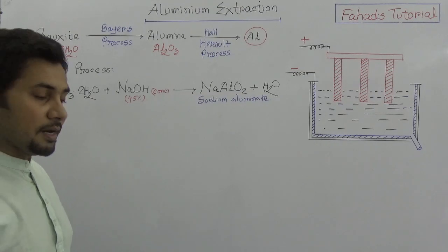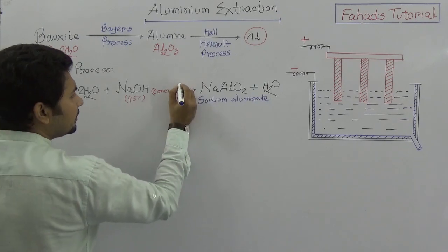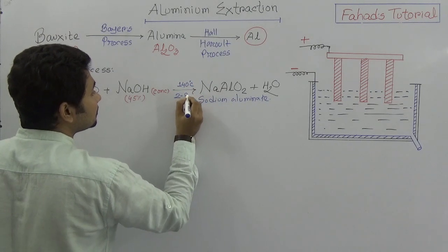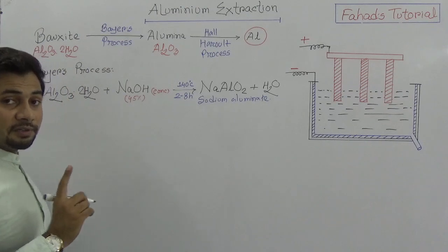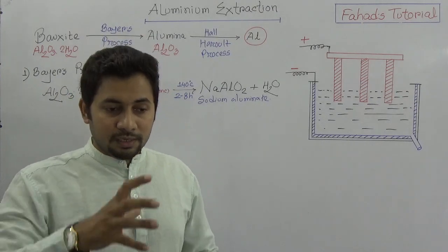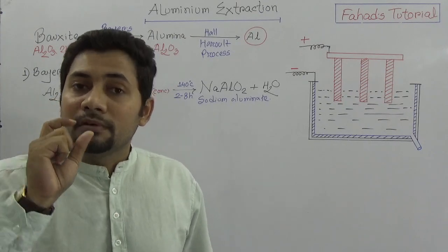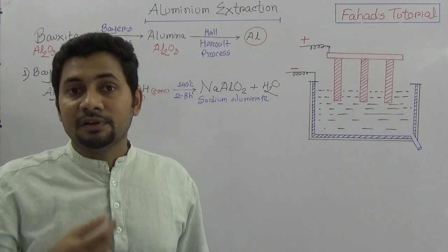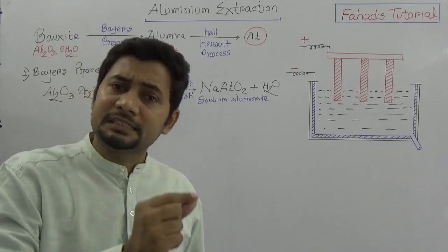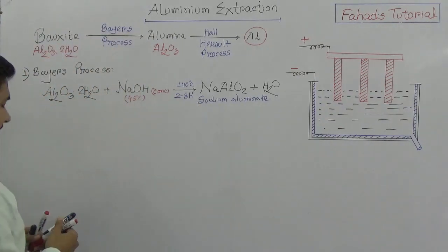The temperature for this step should be around 140 to 150 degrees Celsius, and the process continues for 2 to 8 hours. This is an industrial process, and we know the difference between minerals and ores. Economy is a great factor here — when industry extracts metal, the process must be profitable, so cost management is considered at every step.